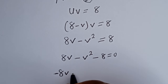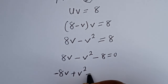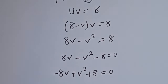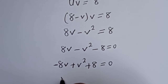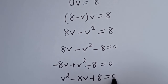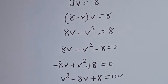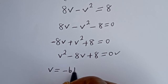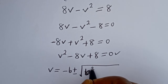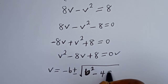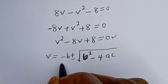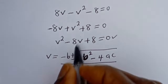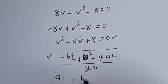Rearranging, we get v squared minus 8v plus 8 equals 0. This is a quadratic equation, which we can solve using the quadratic general formula: v equals negative b plus or minus square root of b squared minus 4ac, all over 2a. From this equation, a equals 1, b equals negative 8, and c equals 8.